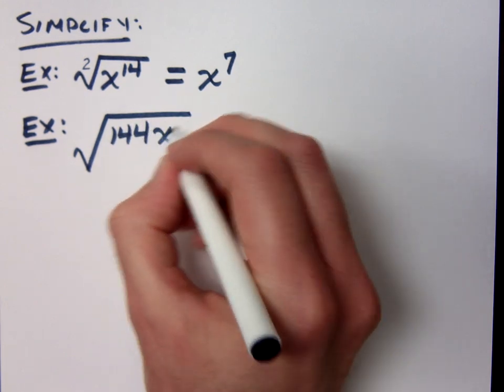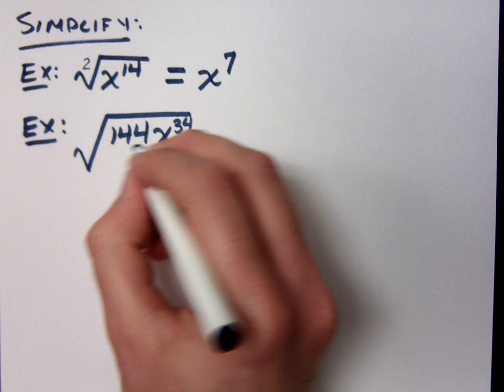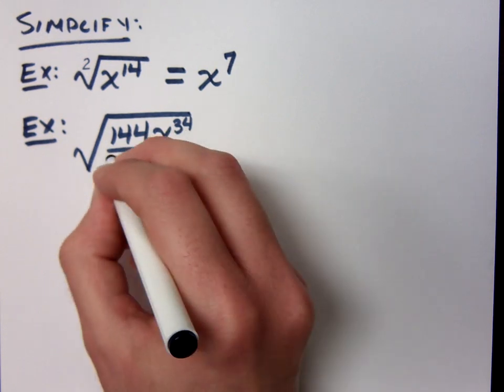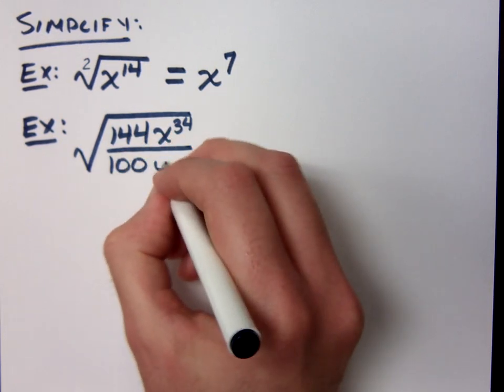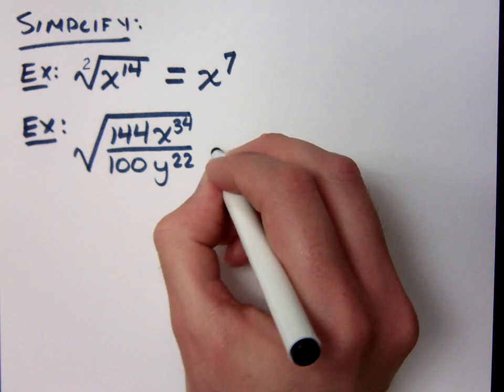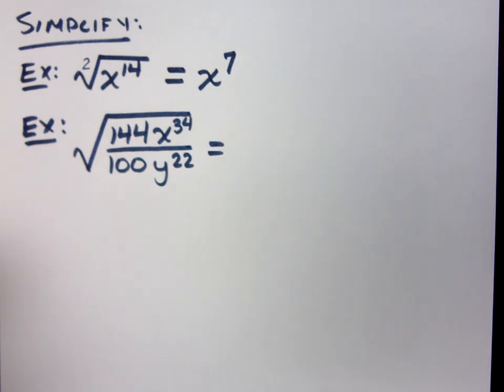The square root of 144x to the 34th over 100y to the 22nd. This may look like a lot of stuff inside the radical, but it's all connected through multiplication. So you can take the square root of each of these pieces.